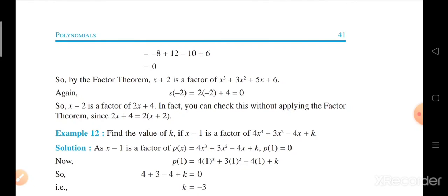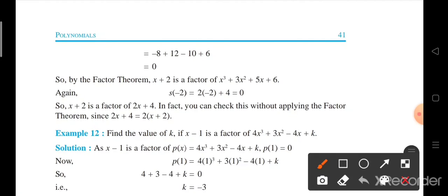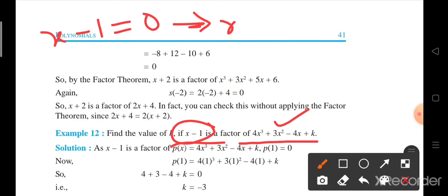Now, find the value of k. If x minus 1 is the factor of this polynomial, that means we can find the value of x. x minus 1 is equal to 0, that is x is equal to 1. This means to say that the polynomial at x equal to 1 is equal to 0. We use this equation to find out the value of k.